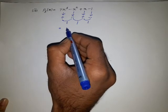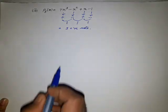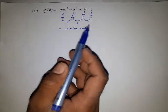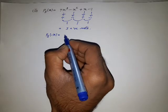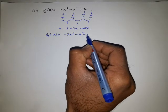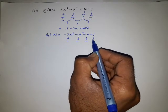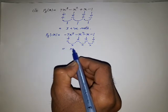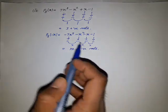We can also say there is no negative root. If we replace x with −x, we get −7x³ − x² − x − 1. All the coefficients are negative, so there is no sign variation and therefore no negative roots — because all three roots of this polynomial are positive.